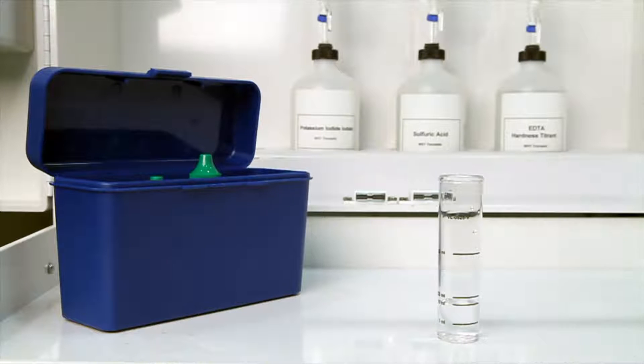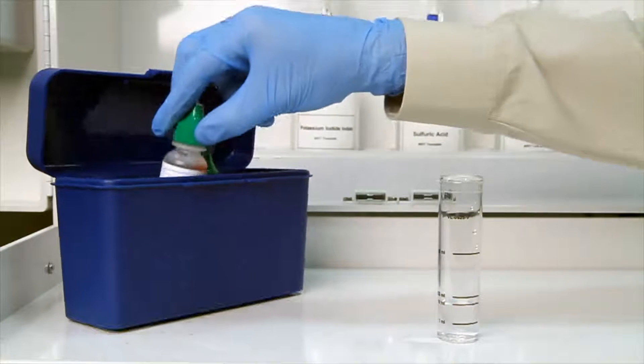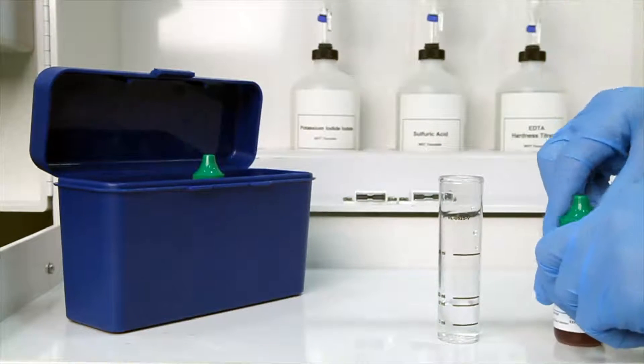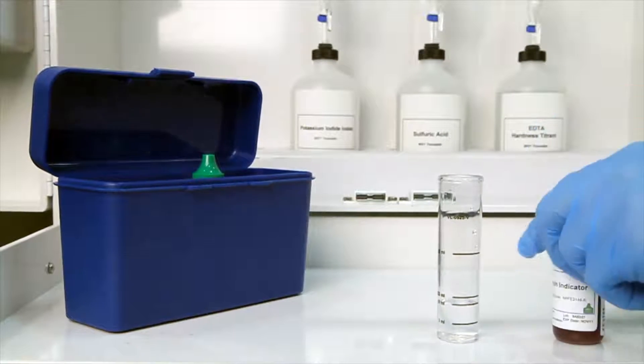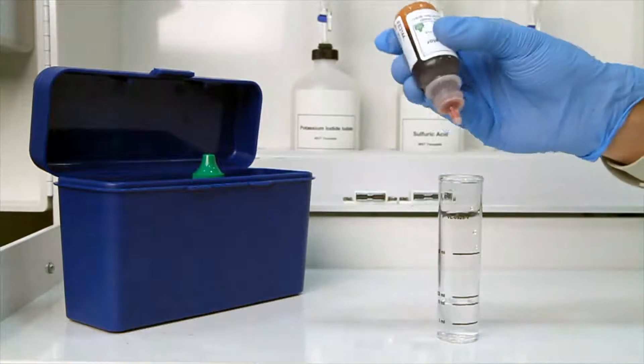The next step according to the Endpoint ID procedure is to add eight drops of ferroin indicator. The bottle contains a dropper tip, so it's important to hold the bottle vertically to get a consistent drop size.